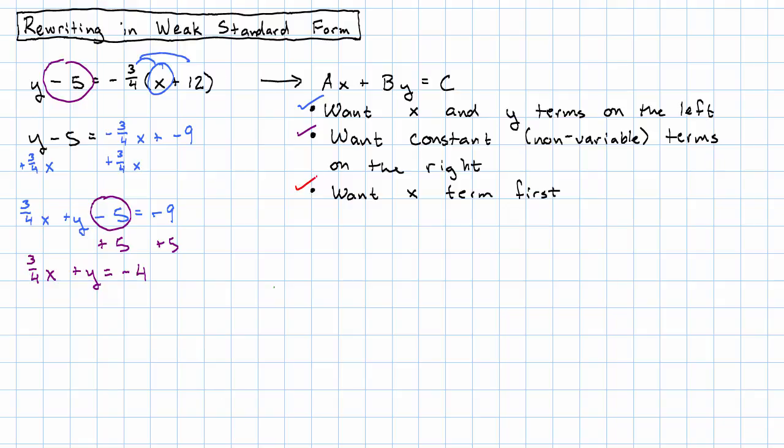The way I've written it, the x term is already first. If it were second, I would just switch the order of the terms. Let me put in a 1 in front of the y. And now it's very clear that this equation is in this form. My a is three-fourths, my b is 1, and my c is negative 4. That's all there is to it.